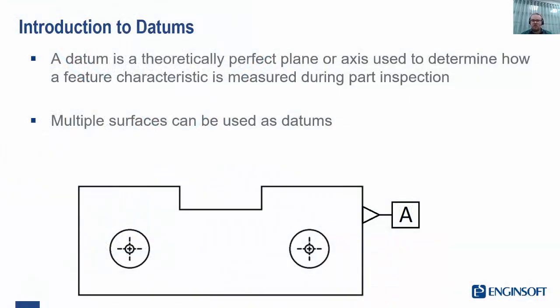In instances where we use ISO GPS to measure a distance or specification that involves multiple surfaces, datums must be utilized. Datums are theoretically perfect surfaces that are defined in reference to an existing feature on a model.